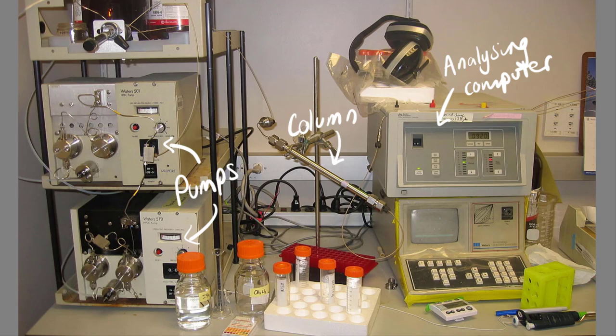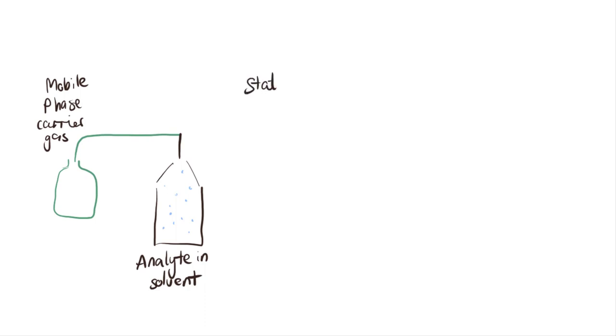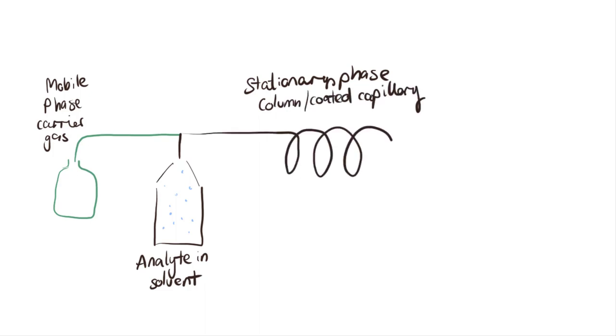The final chromatographic technique I'll talk about is gas chromatography. In this case, the analyte is dissolved into a solvent, which is then vaporized so that it is in its gaseous form. The mobile phase is an unreactive carrier gas like helium or nitrogen. The stationary phase can be either a liquid or a solid, which can be packed into a column like in high-performance liquid chromatography or coated on the inside of a capillary wall.